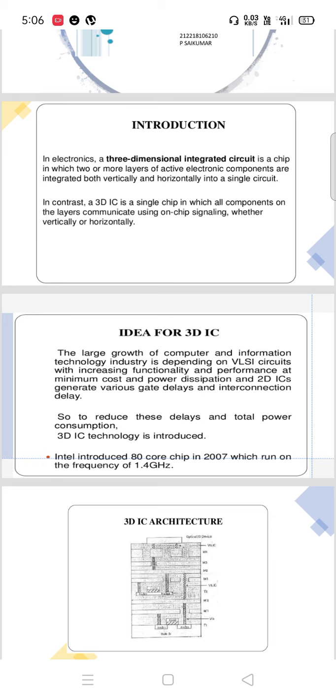In electronics, a 3D integrated circuit is a chip in which two or more layers of active electronic components are integrated both vertically and horizontally into a single circuit. In contrast, a 3D IC is a single chip in which all components on the layer communicate using on-chip signaling, whether vertically or horizontally.